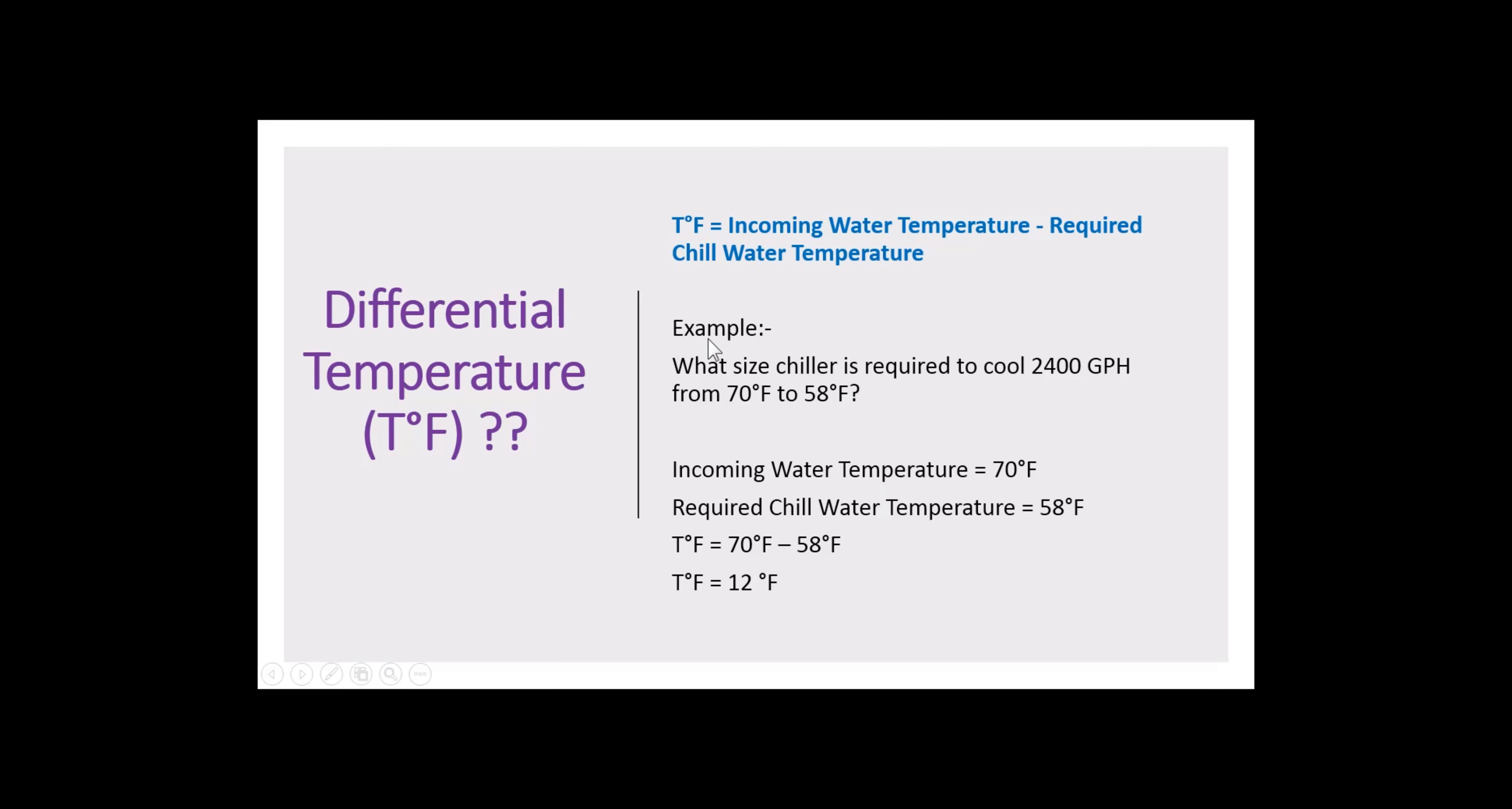Let us have an example. What size of chiller unit is required to cool 2,400 gallons per hour from 70 Fahrenheit to 58 Fahrenheit? Here clearly the flow rate Q is 2,400 gallons per hour. The incoming water temperature is 70 Fahrenheit and the chiller temperature required is 58 degrees Fahrenheit.